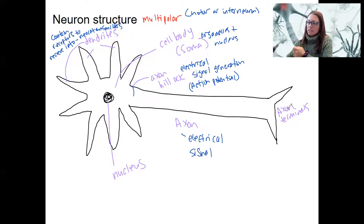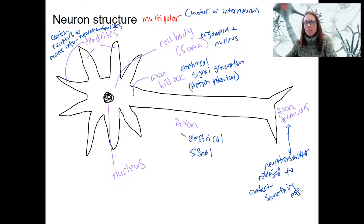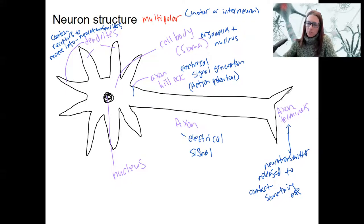At the end, this axon terminal is going to be where neurotransmitter is released, to contact something else — another neuron, skeletal muscle, or smooth muscle, depending on what this neuron is. This membrane here is the presynaptic membrane. Because if we had another neuron over here, that would be the postsynaptic membrane.